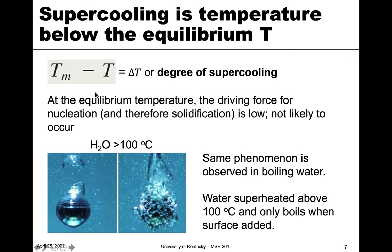When we're right at the equilibrium temperature, delta T is zero, and the driving force for solidification — for nucleation, which is just a fancy word for forming those particles — is very low. So it's not really likely to occur at temperatures right at the melting point.